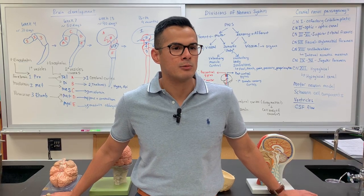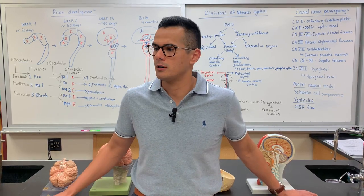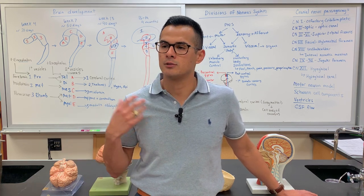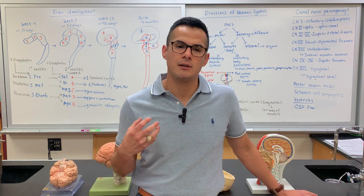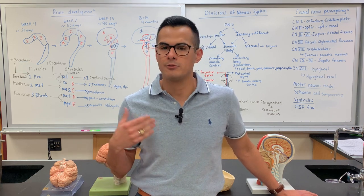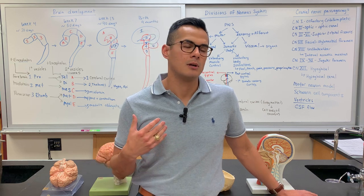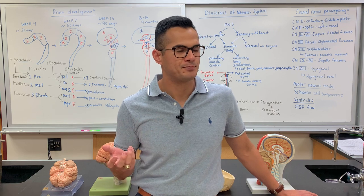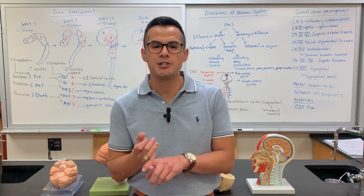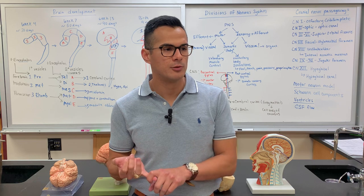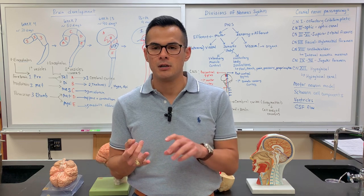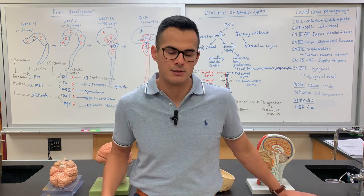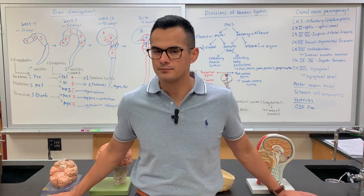In this lecture we're going to go over our brain models. We're going to identify some of the different lobes of the brain, some of the particular regions and what their function is. We're also going to go over some of the deep structures of the brain, the production of cerebrospinal fluid, where it travels, and where it gets drained within the venous system.